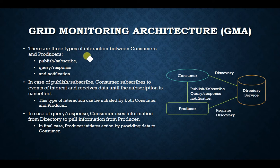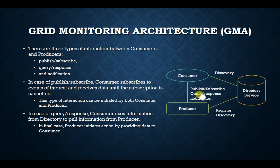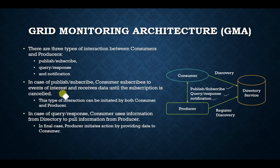There are three types of interactions between consumer and producer: publish-subscribe, query-response, and notifications. In publish-subscribe, the consumer subscribes to events of interest and receives data until the subscription is cancelled.